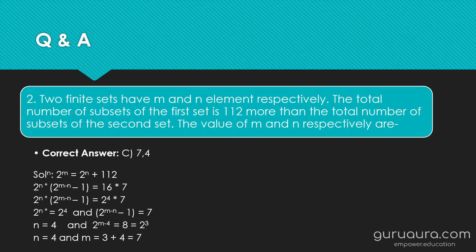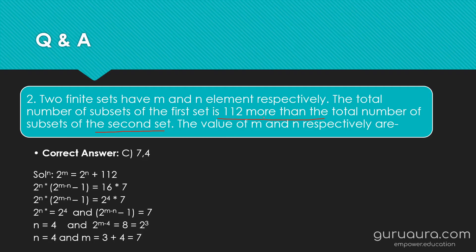Now let's see the answer. Two finite sets have M and N elements respectively, so the number of subsets will be 2^M and 2^N respectively. Since the total number of subsets of the first set is 112 more than the total number of subsets of the second set, we form the equation: 2^M = 2^N + 112.